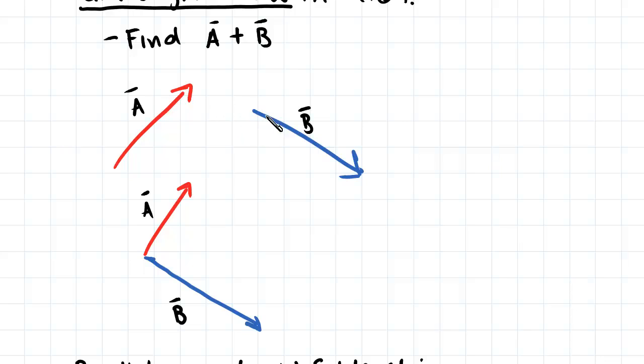So what this means is this vector over here, vector B, is exactly the same as this vector here, and this vector here, and this vector here, so long as the magnitude, that is the absolute value of the vector, and the direction are the same.